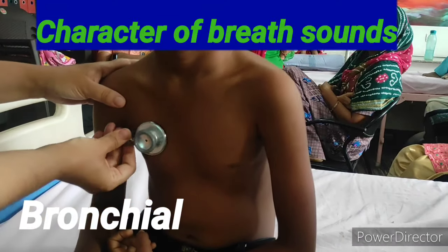For succussion splash, the chest piece is placed at the upper border of dullness and the child is suddenly shaken to elicit a splashing sound of fluid, used to rule out hydropneumothorax. This concludes the respiratory system examination.